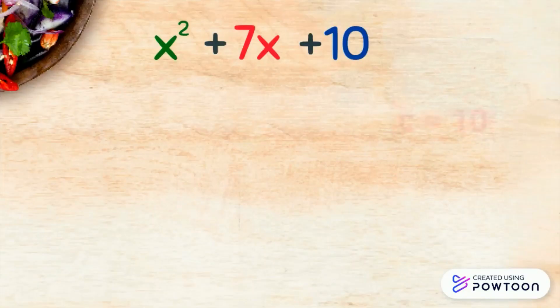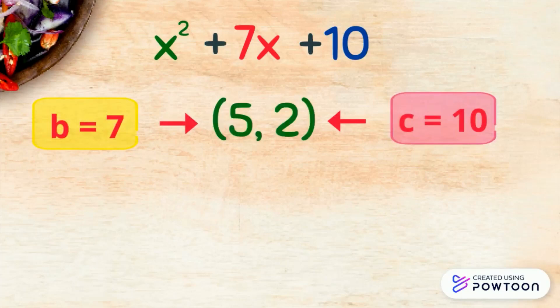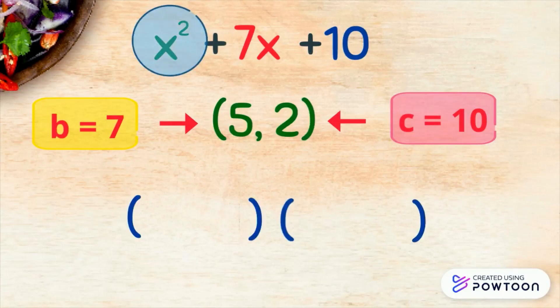The factors of 10, when added equals 7, are positive 5 and positive 2. The factors of x squared is x and x, and of 10 is 5 and 2.